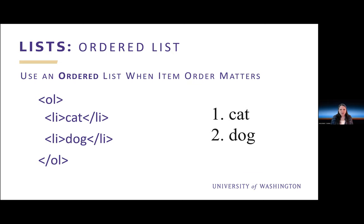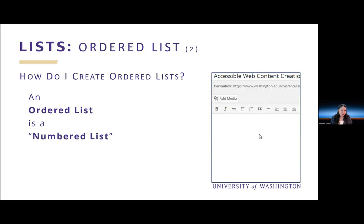The first list is an ordered list — we use this when item order matters. On the left side of my slide, I have a list of pets: cat and dog. Note how I have used the ol tag to define my list — this tells the browser to create a numbered list. On the right side, this is how the list would render in the browser, with two items preceded by their item number. To create an ordered list in WordPress, I add text to the page, select the text, and simply click the numbered list button in the editor's toolbar.